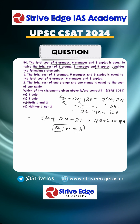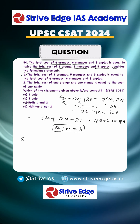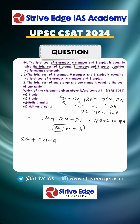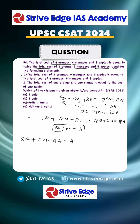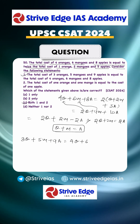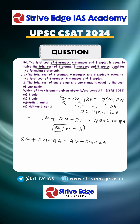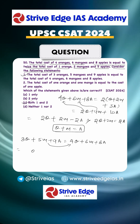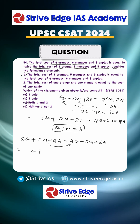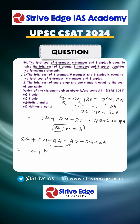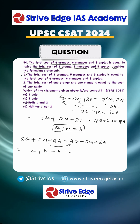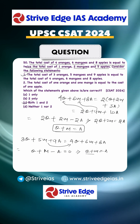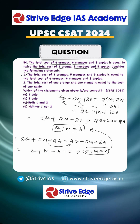We will check each option. Option 1 states: 3 oranges plus 5 mangoes plus 9 apples equals the total cost of 4 oranges plus 6 mangoes plus 8 apples. Rearranging, we get 1 orange plus 1 mango minus 1 apple equals 0, which gives Q plus M equals A. This satisfies our basic equation, so option 1 is correct.